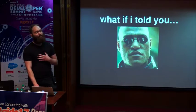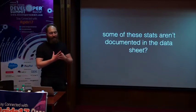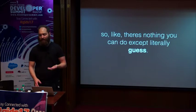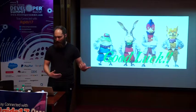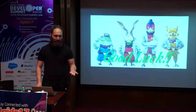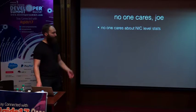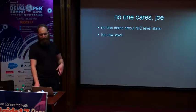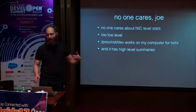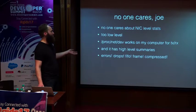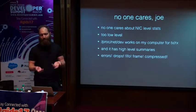And it gets even better: a lot of the statistics output by ETH tool or other system tools aren't even documented in the datasheet for the device. So there's literally nothing you can do to understand what some of these statistics mean other than guess. You could email the device manufacturer, but good luck — chances are they won't respond or tell you what the statistics from their devices actually mean. Maybe you're thinking: no one cares about NIC level statistics — it's too low level. I don't have that ProcNet Dev bug, I don't care about any of this. I just care about high-level statistics like errors, drops, FIFO, frame, compressed.